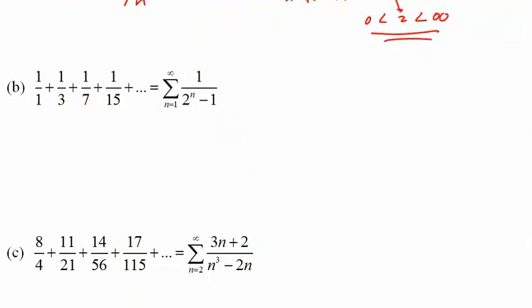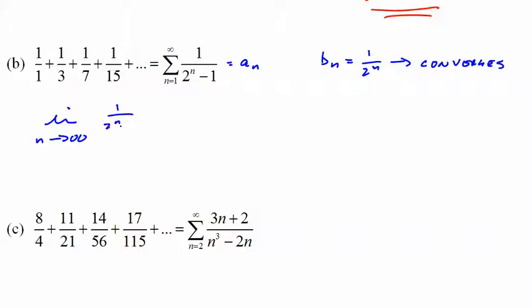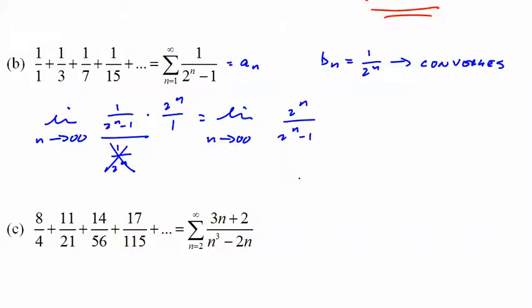For the next example, I compare to the geometric series 1/2^n, which I know converges with ratio 1/2. Notice I don't get an interval of convergence or radius of convergence — just whether it converges. The limit as n approaches infinity of (1/(2n−1)) divided by (1/2^n) simplifies to 2^n/(2n−1), which goes to 1 — basically the same on top and bottom. Since b_n converges and we got a number between 0 and infinity, this series also converges.